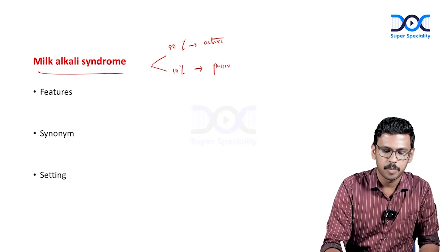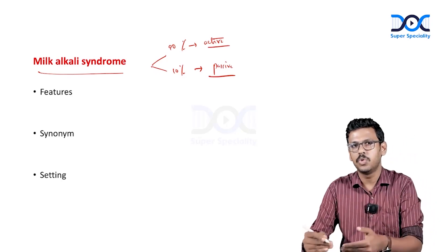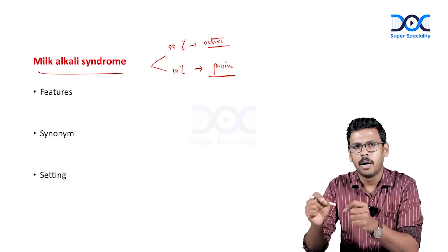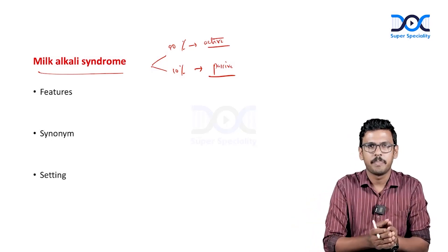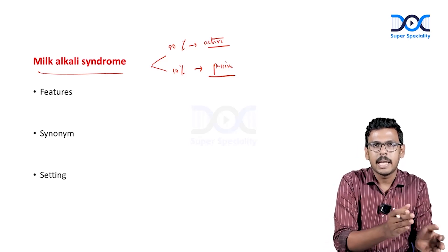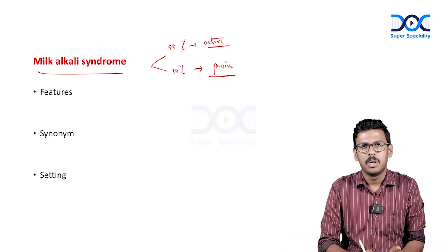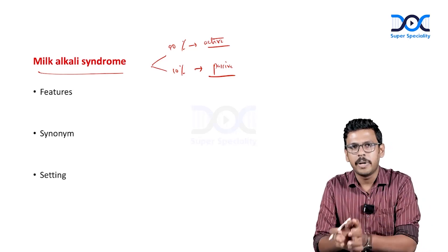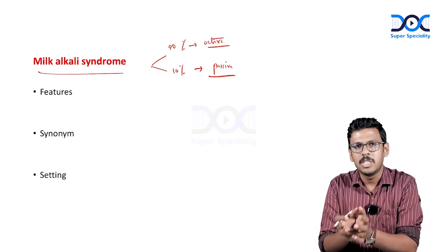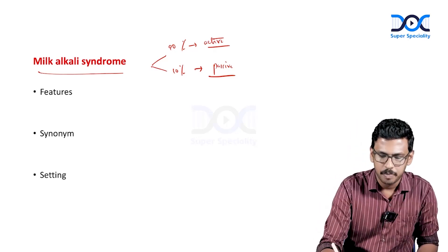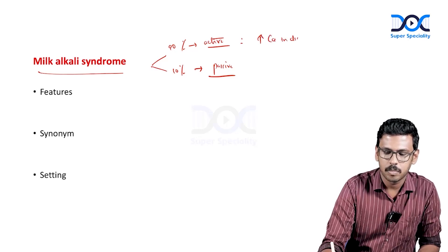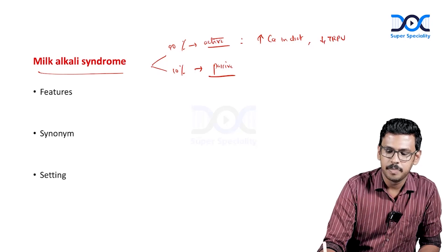Active absorption is strictly under control of calcitriol and indirectly PTH. Whenever there is excessive calcium in the diet, the gut's local calcium concentration increases, calcitriol is downregulated, and TRPV6 is also downregulated — so active absorption decreases. Passive absorption has no hormonal checkpoint.